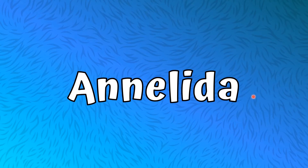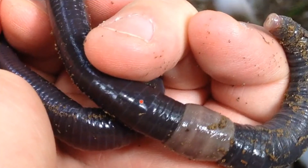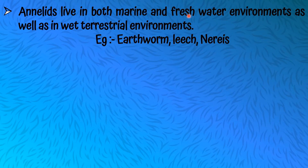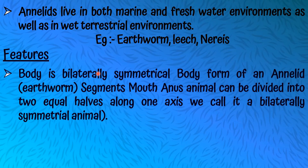Let's talk about our second Invertebrate group, Annelida, also known as Annelids. Annelids live in both marine and freshwater environments as well as in wet terrestrial environments. Marine means sea water and freshwater is drinking water. The examples are earthworm, leech, and nereis.